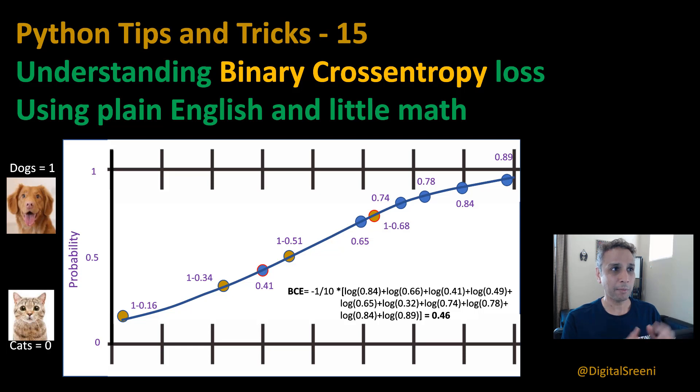The reason I'm talking about binary cross-entropy is that we use this as a loss function for classification purposes and even in semantic segmentation. Even in generative adversarial networks, if you look at your discriminators or generators, this is a quite common loss function, so it only makes sense for us to understand this a little bit better.